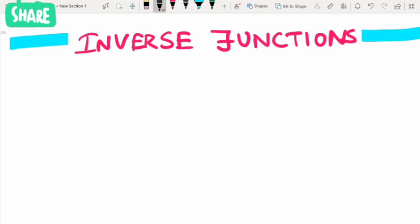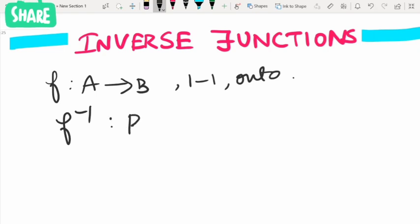Hello everyone, welcome to One Star Mathematical Solutions. Today we are going to see about inverse functions. Say we have a function f from A to B which is one-to-one and onto. Then we can define the inverse function f inverse as a function from B to A.